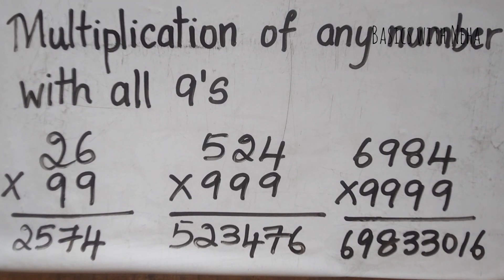Hello, welcome back to my YouTube channel. In today's video, I'm going to show you how to do the multiplication of any number with all nines. So equal number of multiplicand and multiplier. That is the condition and it's a Vedic maths trick.